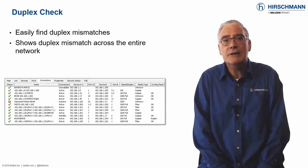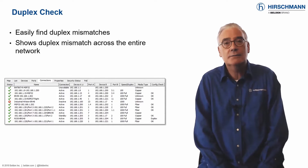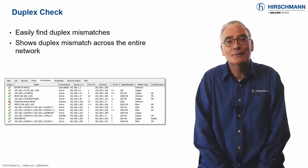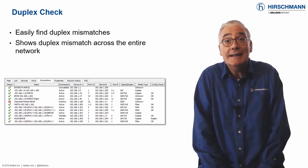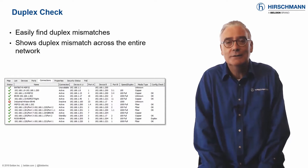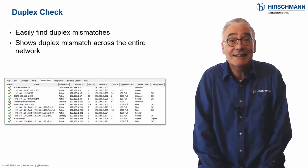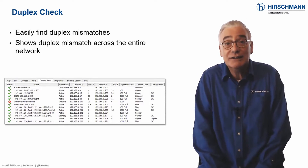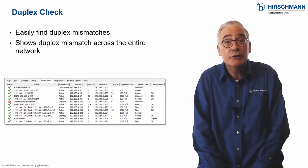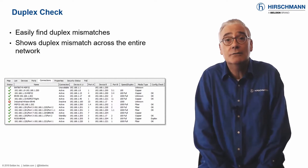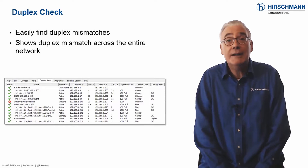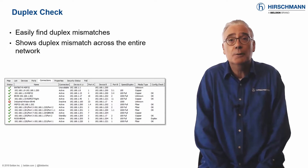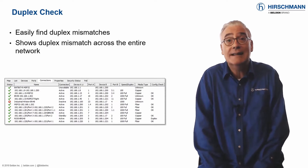Duplex mismatches are a thing of the past, right? Nobody manually configures duplex anymore, do they? In IT networks, probably not. But in OT networks things are not so clear. Some legacy end devices have hard-coded duplex and do not support auto-negotiation. Other networks were manually configured in the past, and this is only now causing problems as bandwidth utilization increases.